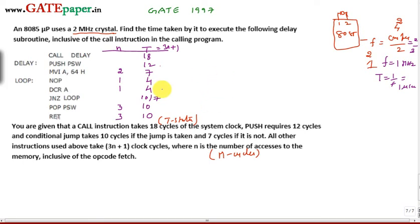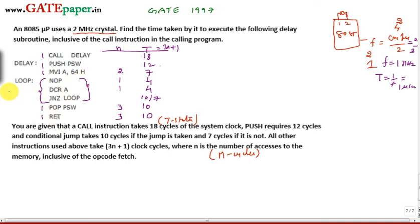In this program, the CALL, PUSH, and MVI instructions are each executed only once. The loop — containing NOP, DCR A, and JNZ — executes multiple times based on the contents of register A. Since A is loaded with 64H, which equals 100 in decimal, the loop executes 100 times.